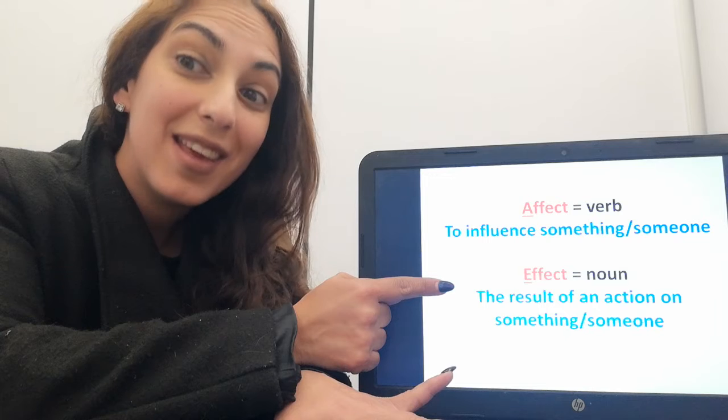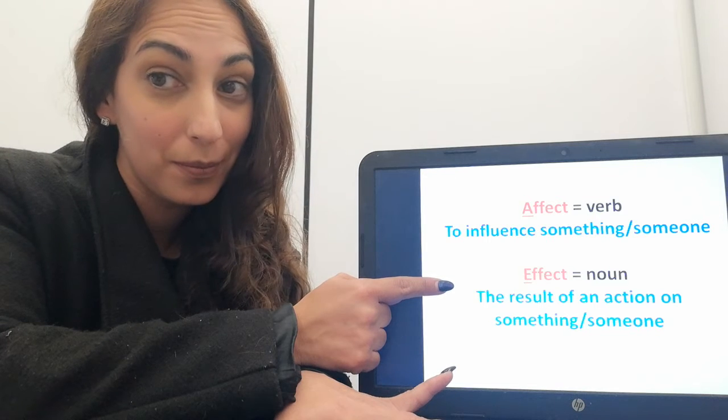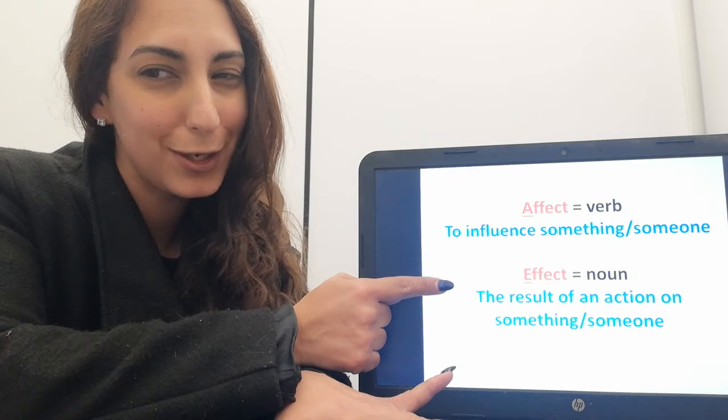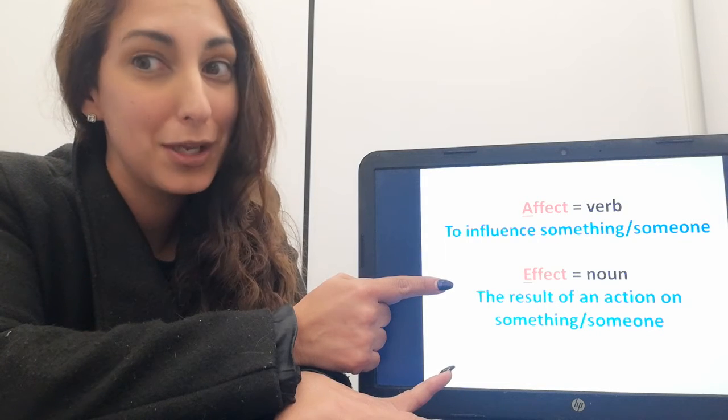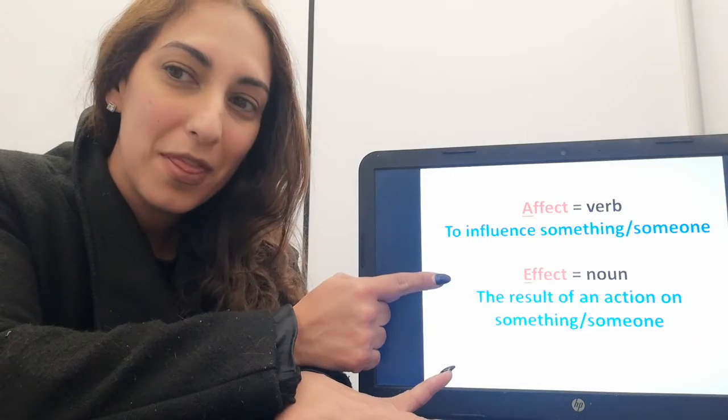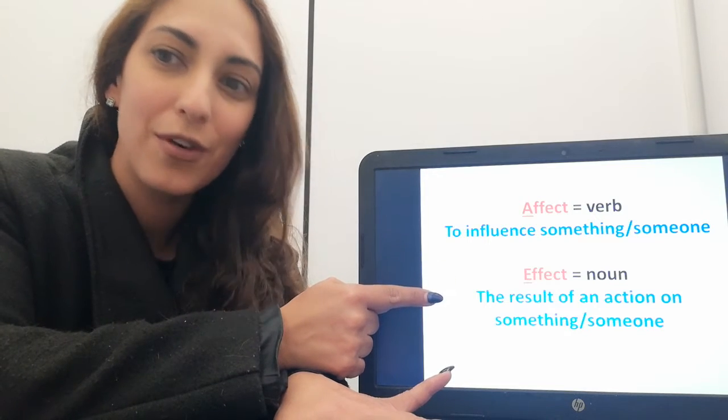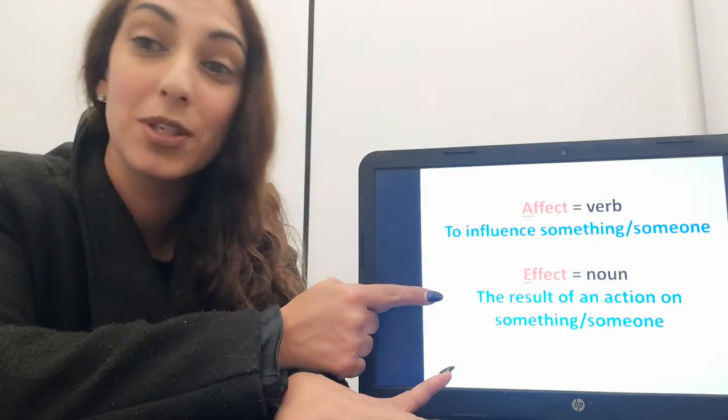Now effect with an E is a noun, which means usually you'll have an article at the front of this word - a or the, depending on if you have an adjective or not. But this means the result of an action on someone or something.